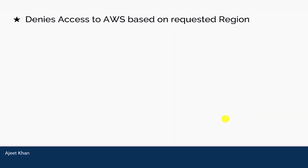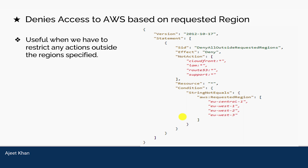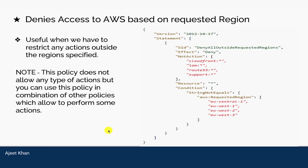Next is denying access to AWS based on the requested region. Here we are denying all actions on the given resources if the requested region does not match the specified regions. This policy denies access to any actions outside the regions specified using the AWS requested region condition key. This is useful when you need to restrict any action outside certain regions. Note that this policy does not allow any type of action, but you can use it in combination with other policies that allow specific actions.